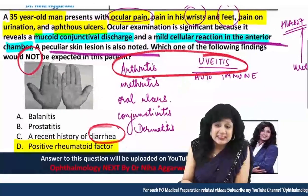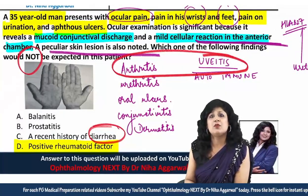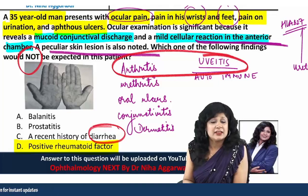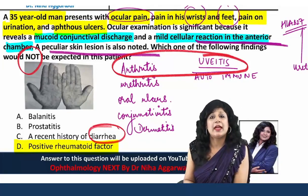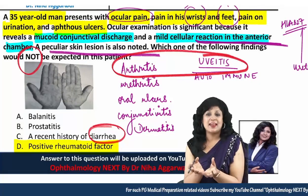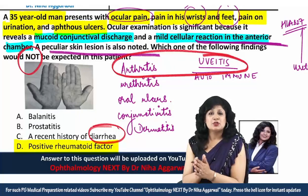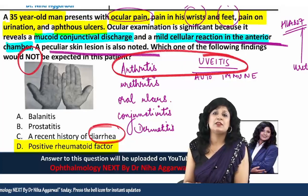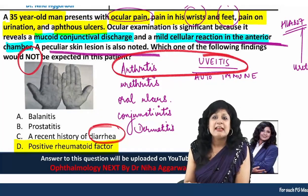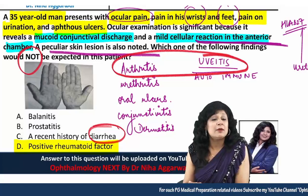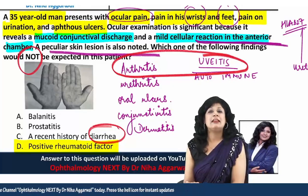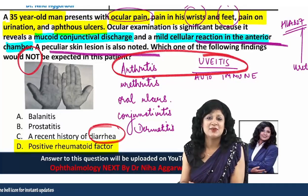This is an excellent integrated question combining ophthalmology, dermatology, orthopedics, microbiology, and medicine. They haven't asked about any one specialty specifically — just about the rheumatoid factor. These kinds of questions are expected in NEET PG 2021, testing fundamental knowledge about a disease. I hope you are enjoying solving these questions. Thank you and happy ophthalmology!